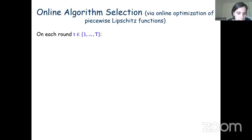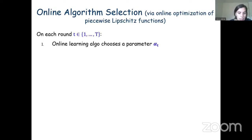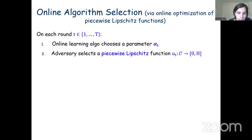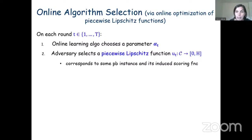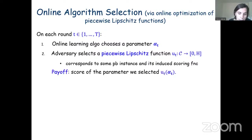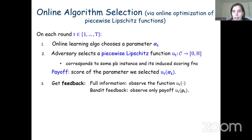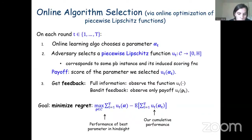The major contribution in these papers is to identify general properties of utility functions sufficient to show no-regret guarantees. At a high level, we show that if the utility functions are piecewise Lipschitz and have dispersed discontinuities, then no-regret is achievable. In the online learning algorithm selection problem, we go in rounds: in each round we select a parameter α_t, an adversary picks a piecewise Lipschitz utility function corresponding to some problem instance, we receive the score for our chosen α_t, and in the full information setting we observe the full scoring function. Our goal over T rounds is to minimize regret — the gap between the best parameter in hindsight and our cumulative performance.